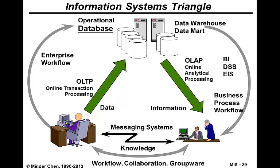This information system triangle further explains different types of information systems. Starting with the online transaction processing system, that's where operational-level employees handle business transactions like customer orders. The information will be stored in operational databases. The operational database data can be extracted, transformed, and stored in a so-called data warehouse, or a subset of it called a data mart, which would be easier for middle and top-level executives to perform analytical processing — the so-called OLAP, as mentioned earlier.